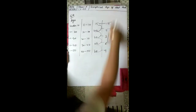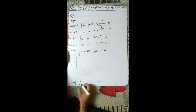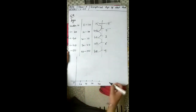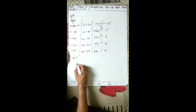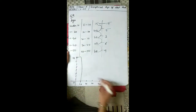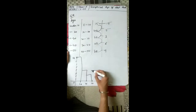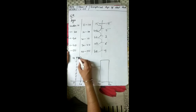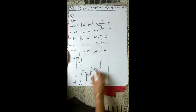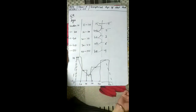Now you have the frequencies. Draw the histogram starting from 0, 10, 20, 30, 40, 50 on the x-axis. The first bar is 15, then 5, then 3, then 6, then 9 — draw each bar accordingly. If they ask to make the frequency polygon, just make the frequency polygon over the histogram. Draw this in the graph.